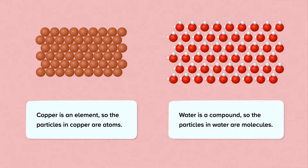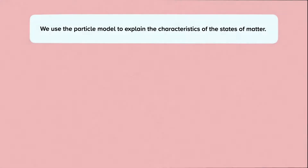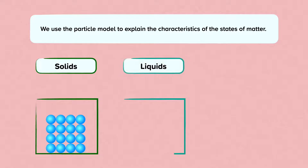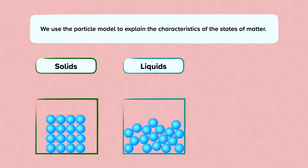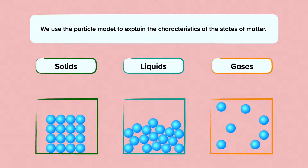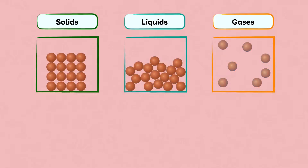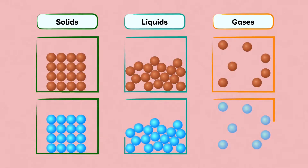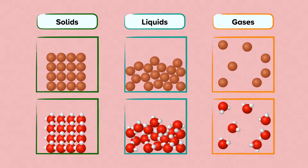Water is a compound, so the particles in water are molecules. Let's quickly look at how molecules like water are represented in particle diagrams. We use a simple particle model to explain the characteristics of the states of matter: solids, liquids and gases. The particles in a solid are very close to each other in a regular pattern and held in fixed positions. Particles in a liquid are in contact with each other, not in fixed positions, so they can move around but fill the bottom of the container. In gas, particles are far apart, filling the container they are in. When we talk about the particle model we use small solid spheres to represent the particles. These particles can be single atoms or molecules — the particles in copper are copper atoms, and the particles in water are water molecules, but we can use solid spheres to represent both atoms and molecules in these diagrams.